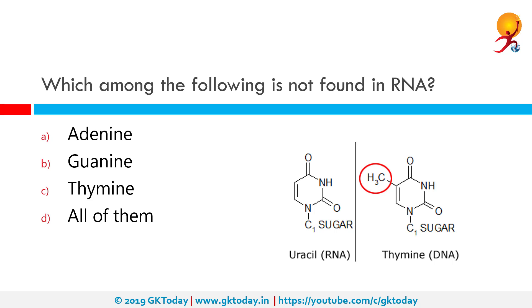Which among the following is not found in RNA? The correct answer is thymine. RNA is a polymer with a ribose and phosphate backbone and four different bases: adenine, guanine, cytosine, and uracil. The first three are the same as those found in DNA, but in RNA, thymine is replaced by uracil as the base complementary to adenine. Uracil is also a pyrimidine and is very similar to thymine.